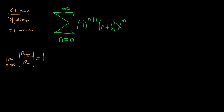So this is equal to the limit as n approaches infinity. We'll keep the absolute value, and we're basically going to replace all of the n's with n plus 1's. So this first one already has an n plus 1, so it'll be n plus 1 plus 1, which is n plus 2. So negative 1 to the n plus 2. And here we have n plus 6, so it'll become n plus 1 plus 6, that's n plus 7.